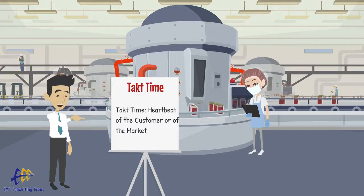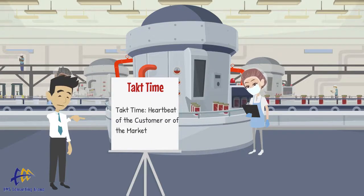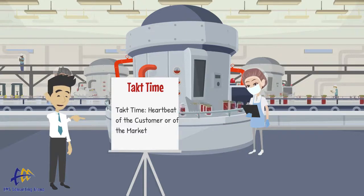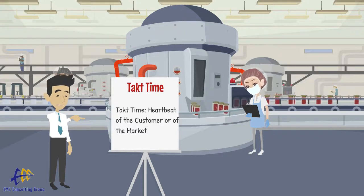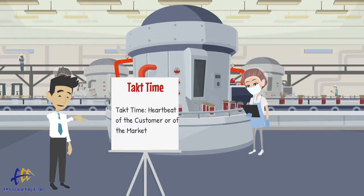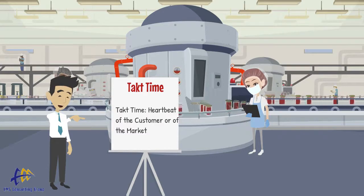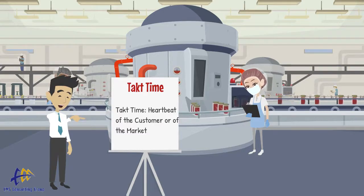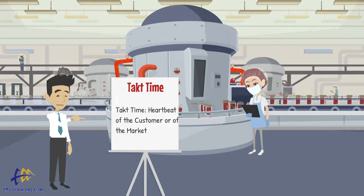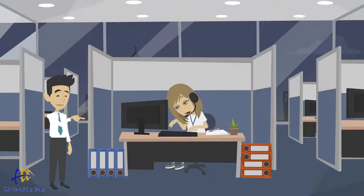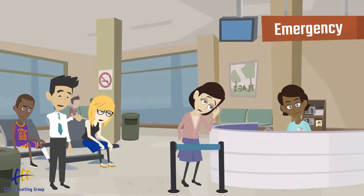Of course, the most commonly cited example you will find in the literature would be TAC time for an automotive assembly plant. For example, one automobile must be completed every 45 seconds. TAC time can be used for more than just production processes. We can have a TAC time for insurance claims processing or patients visiting a medical office.